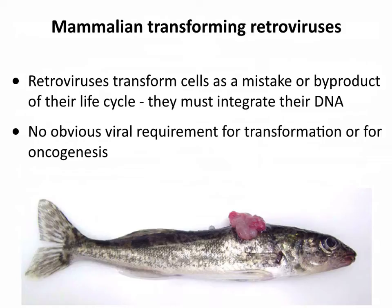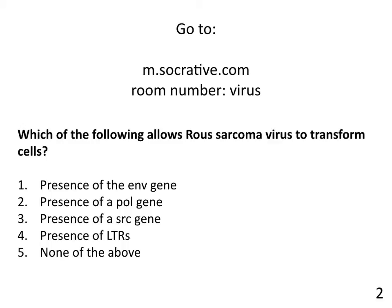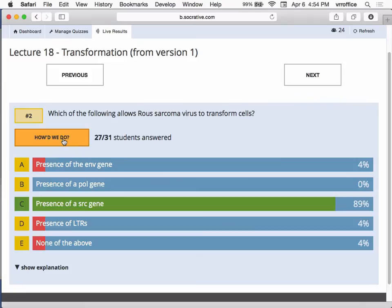The next question: which of the following allows Rous sarcoma virus to transform cells? Presence of the envelope gene, presence of a POL gene, presence of a SARC gene, presence of LTRs, or none of these? Most of you answered presence of a SARC gene — that's absolutely right. That's the cellular oncogene that this virus has picked up, which allows it to transform cells. The envelope and the LTRs are not essential, because in many of these defective retroviruses they're not present.